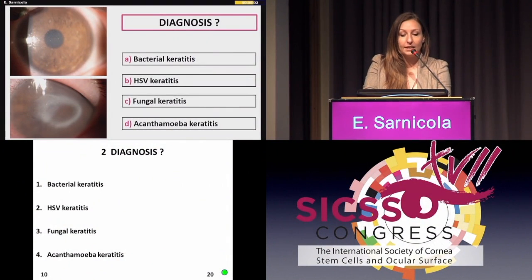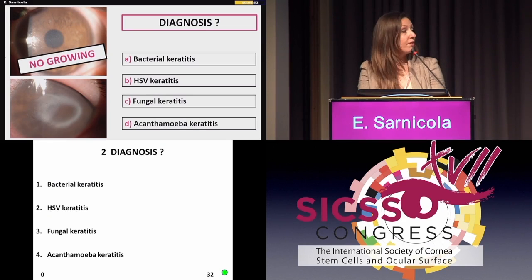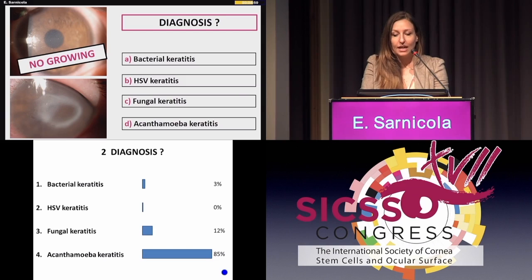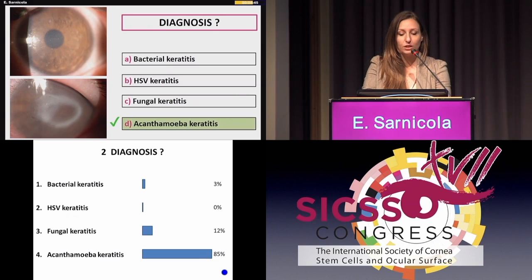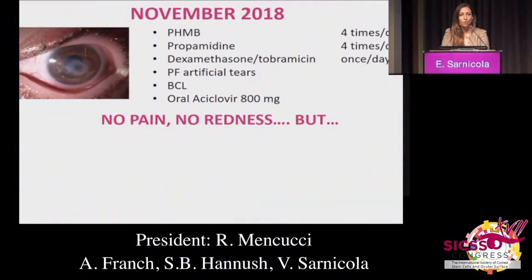Is it bacterial keratitis, herpetic keratitis, fungal keratitis, or acanthamoeba keratitis? Let me tell you from the beginning that both culture and PCR were negative. The audience answered acanthamoeba keratitis. So despite the negative culture, that was actually our assumption as well. After shock therapy, we succeeded in achieving a stable picture of symptoms and clinical signs with a maintenance treatment regimen.